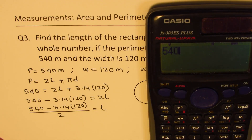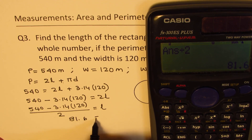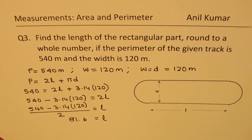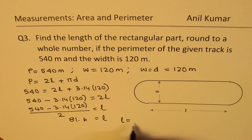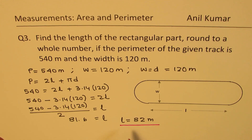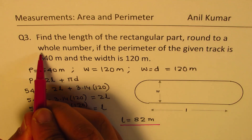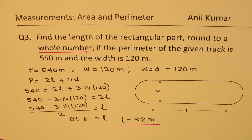Let's calculate: 540 minus 120 times 3.14, then divide by 2. We get 81.6 as the length. We have to round this to a whole number. Since it is 0.6, we round up and get length equals 82 meters.